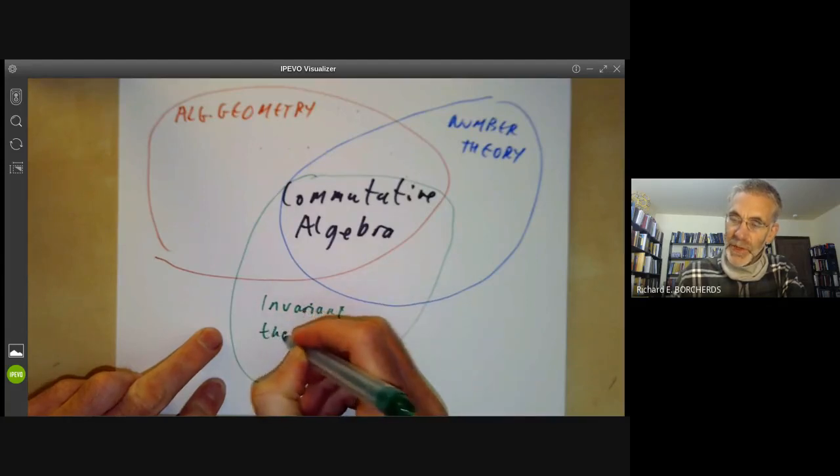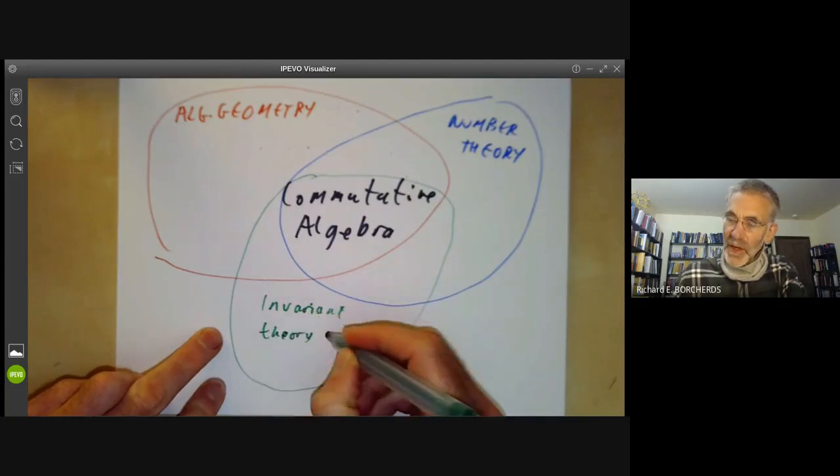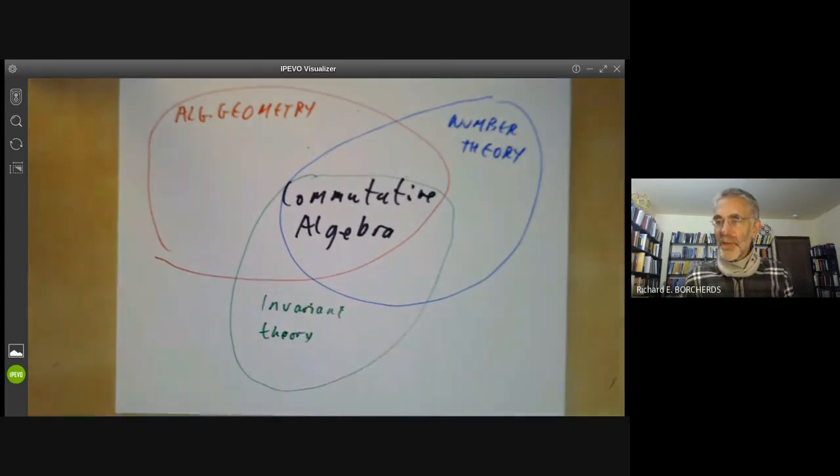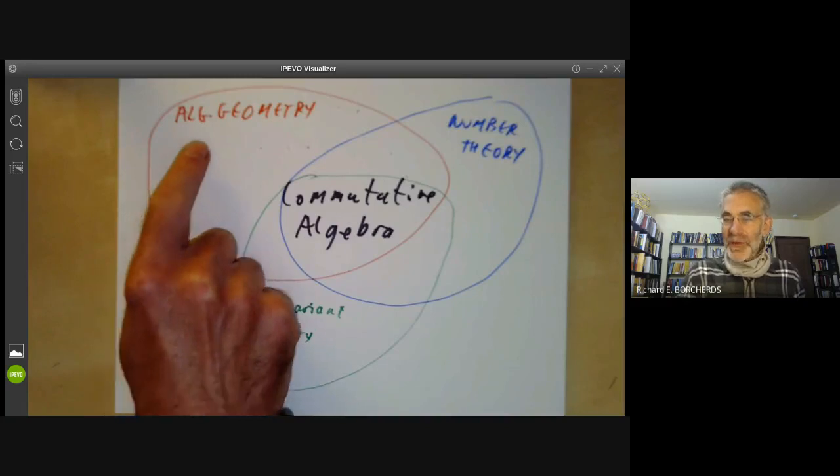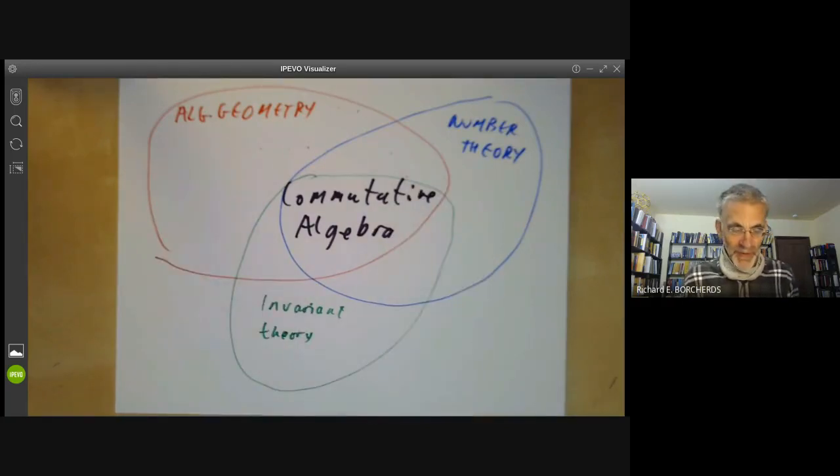A lot of the original work on commutative algebra was motivated by problems in invariant theory. The philosophy of this course is that commutative algebra is really something you use in algebraic geometry and number theory rather than something you study for its own sake. This is directed mainly towards people who want to do research in algebraic geometry or number theory and need commutative algebra to do so.